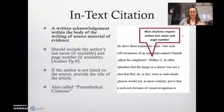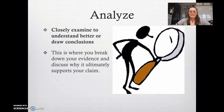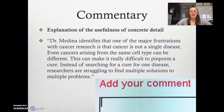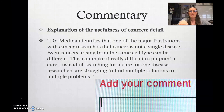This is also called a parenthetical citation because it goes in parentheses. To analyze, in the context of writing a research paper, is to closely examine in order to understand better or draw conclusions — this is where you break down your evidence and discuss why it ultimately supports your claim. Commentary is when you explain the usefulness of a concrete detail. For example: 'Dr. Medina identifies that one of the major frustrations with cancer research is that cancer is not a single disease; even cancers arising from the same cell type can be different.' The commentary would be: 'This can make it really difficult to pinpoint a cure — researchers are struggling to find multiple solutions to multiple problems.' That's discussing why the information is important or useful.